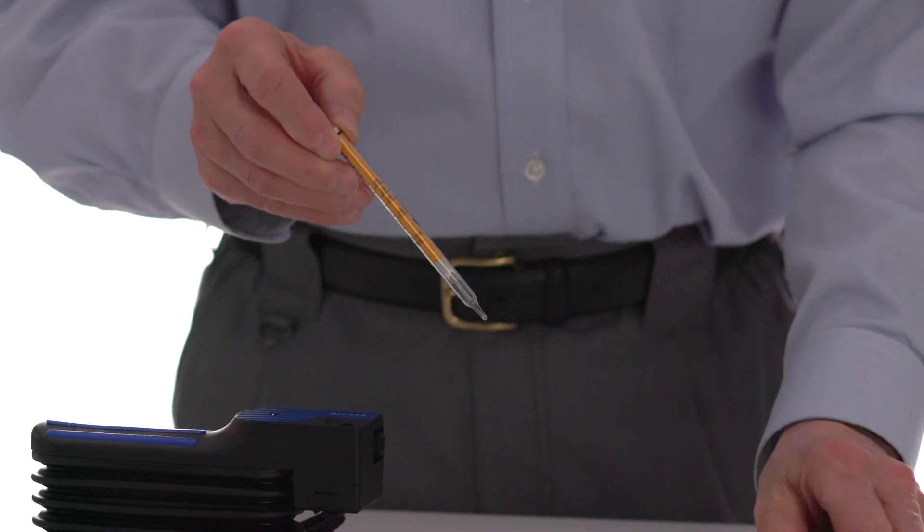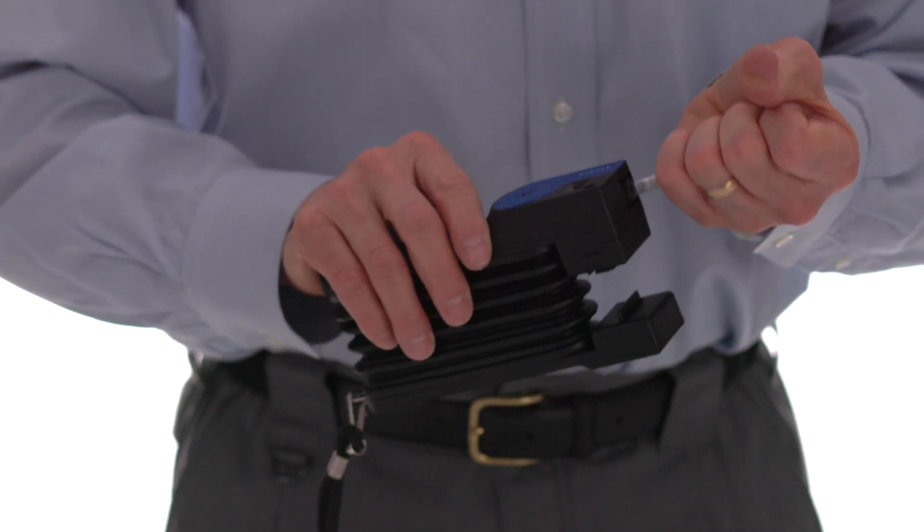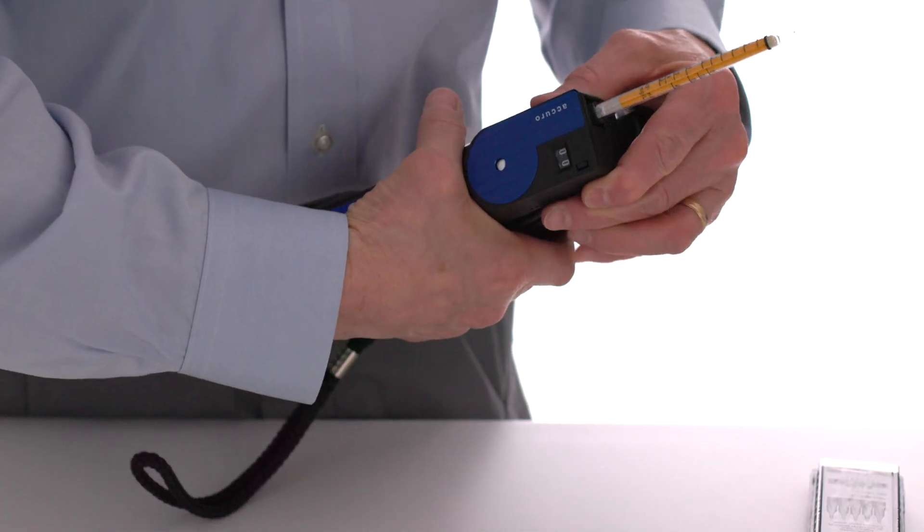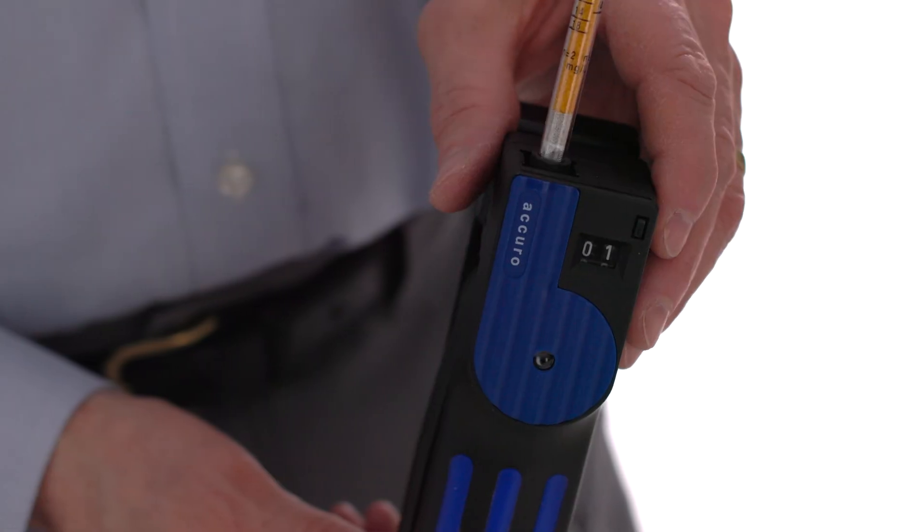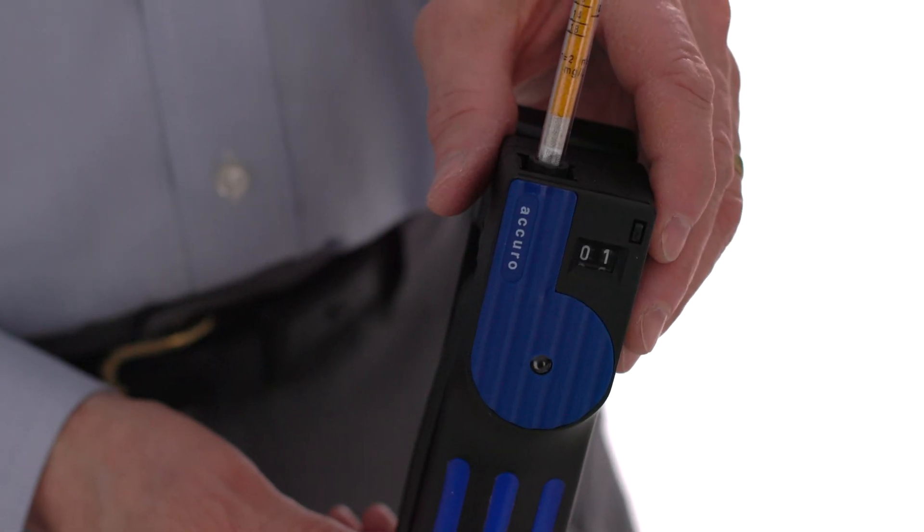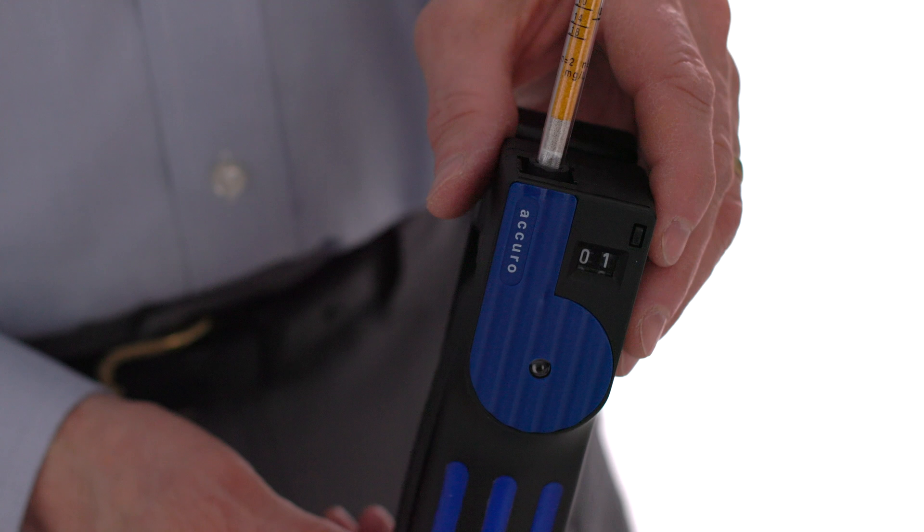Insert an unopened Drager Tube securely into the inlet and completely compress the bellows. The End of Stroke Indicator will turn from white to black. The pump is adequately leak-proof if the End of Stroke Indicator has not turned white within 15 minutes.